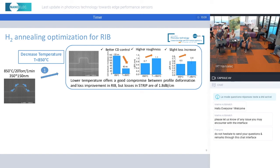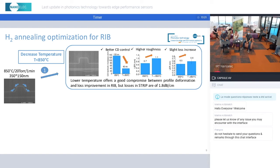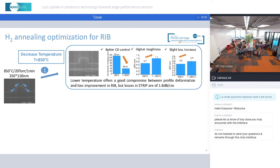We have first evaluated the impact of temperature. You can observe here that by decreasing the temperature, we can indeed improve the profile and have better control of the dimension at the bottom. Since now the increase is only 40 nanometers, which is completely acceptable.